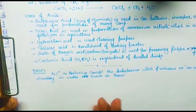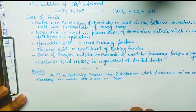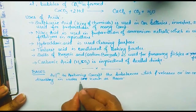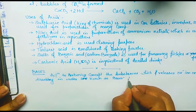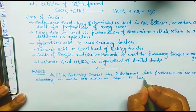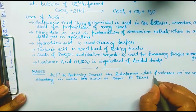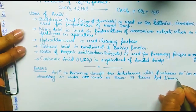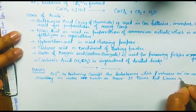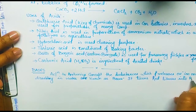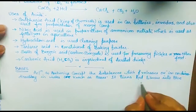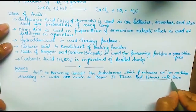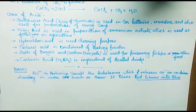For identification of a base using litmus test: a base turns red litmus into blue. If we use pH paper, it will also turn blue. Bases are bitter in taste.